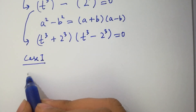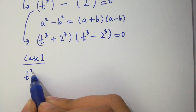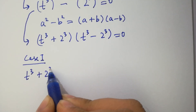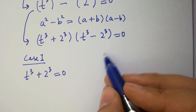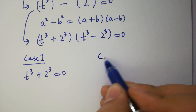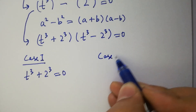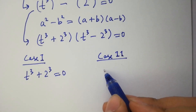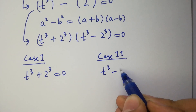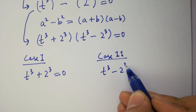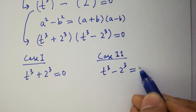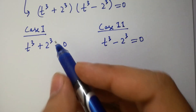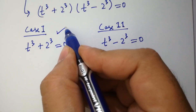t cubed plus 2 cubed equal to 0. And the second case is t cubed minus 2 cubed equal to 0. First of all, I am going to solve Case 1.